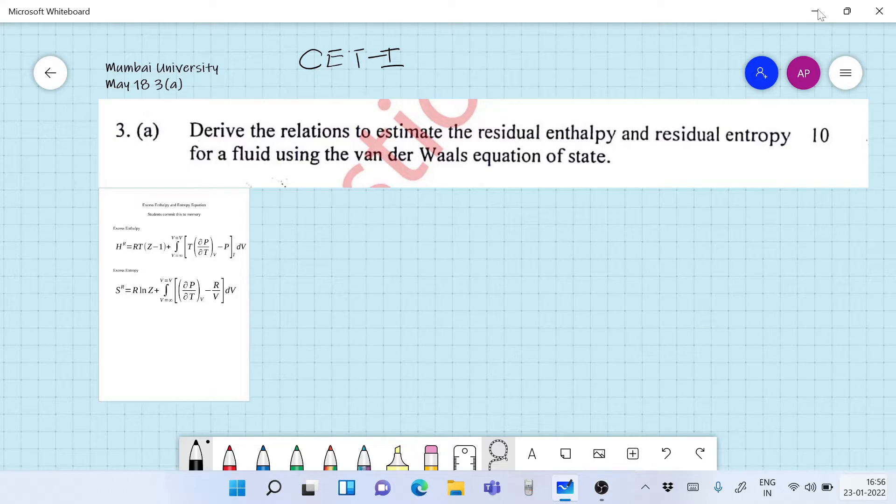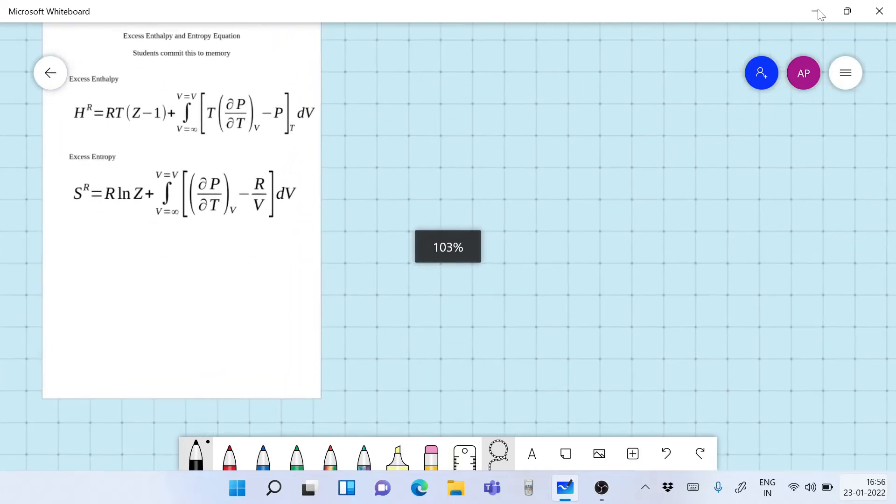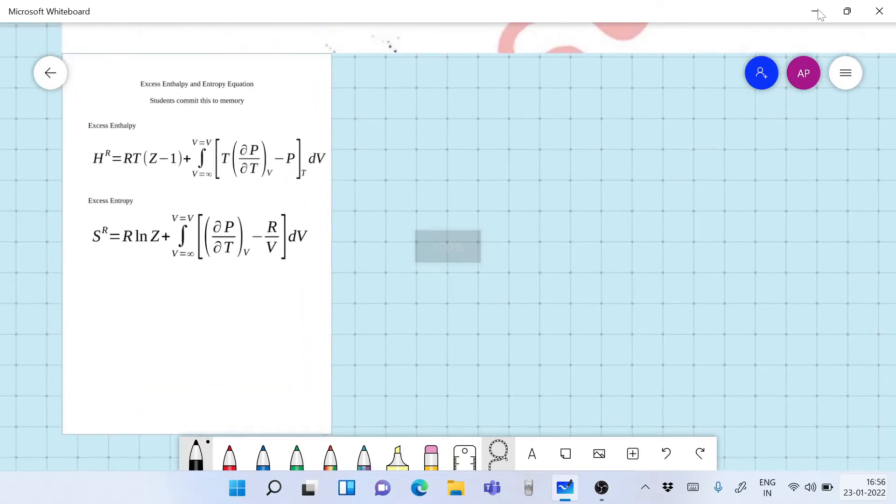It's of 10 marks. It says derive the relations to estimate residual enthalpy and residual entropy for a fluid using Van der Waals equation of state. Now I would always advise the students to commit to memory these two formulas for calculating the residual enthalpy and the residual entropy of a fluid.